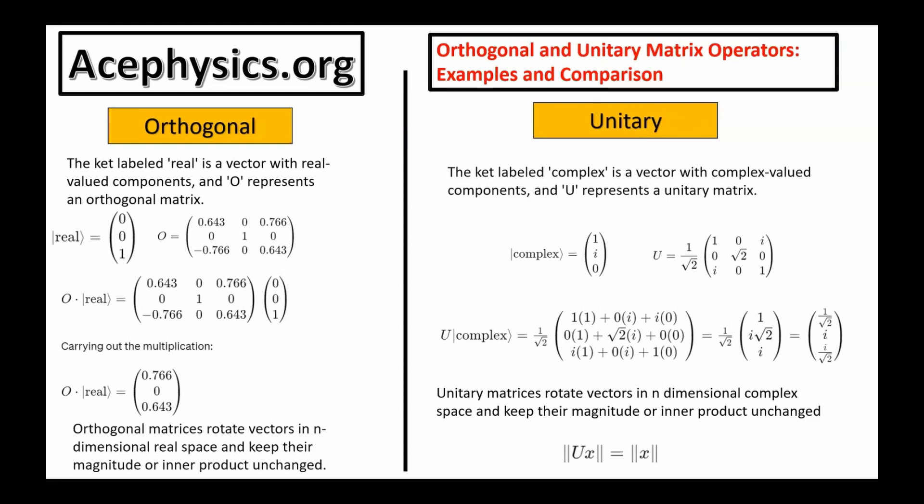I want to introduce you to the term unitary matrix or unitary operator and compare them to orthogonal operators. The difference between orthogonal and unitary operators is that orthogonal matrices act on real vectors and have real number components, while unitary operators act on complex space CN and have complex numbers as matrix components. Ultimately, the difference between a unitary matrix and an orthogonal matrix is complex numbers.